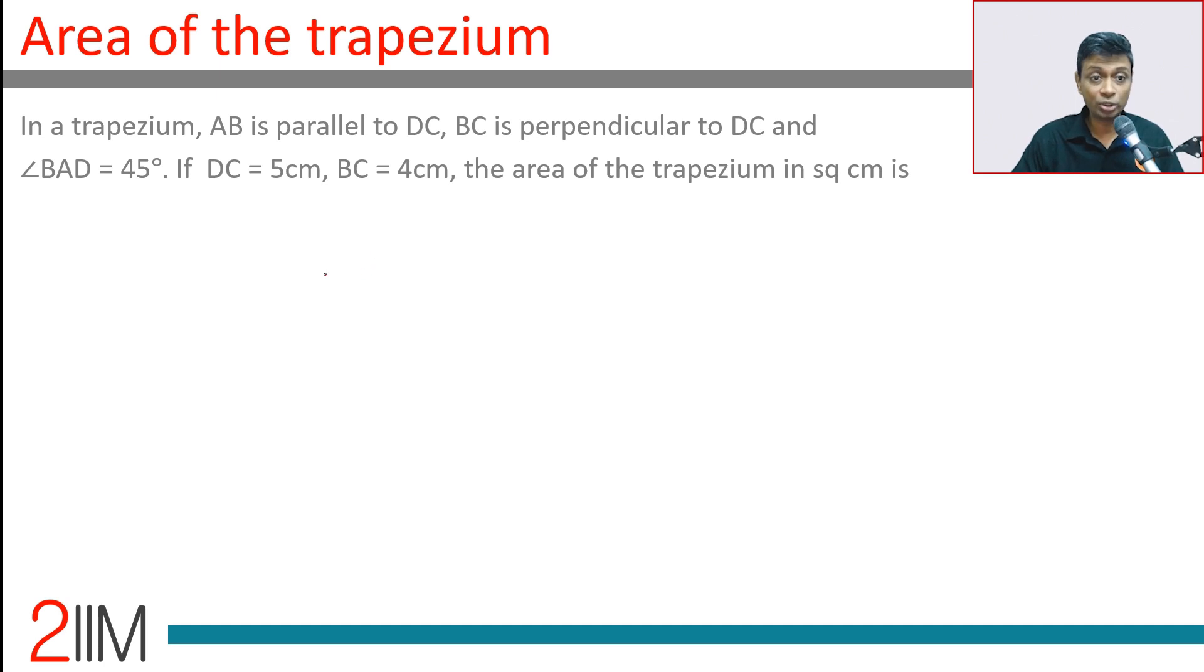In a trapezium, AB is parallel to DC, BC is perpendicular to DC.